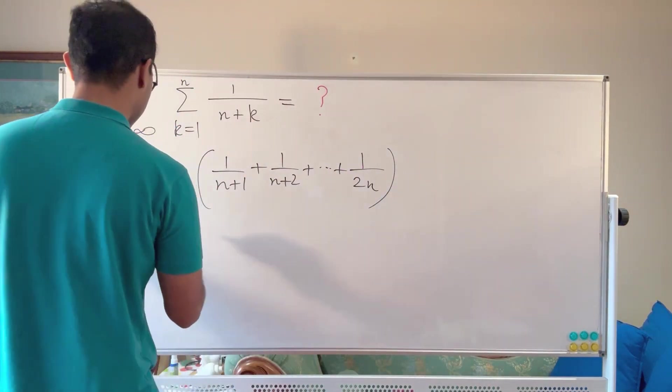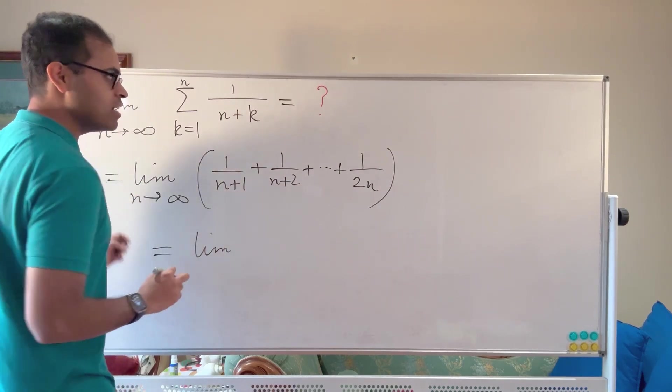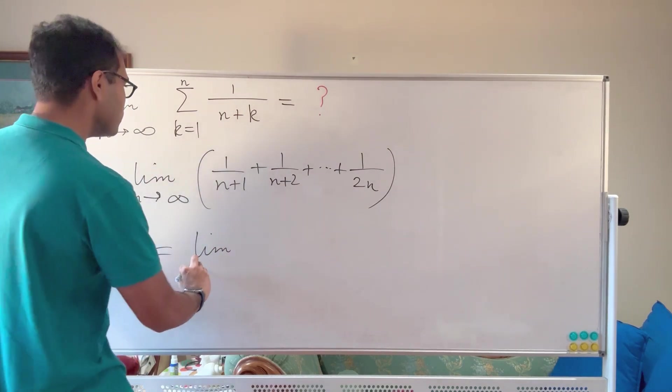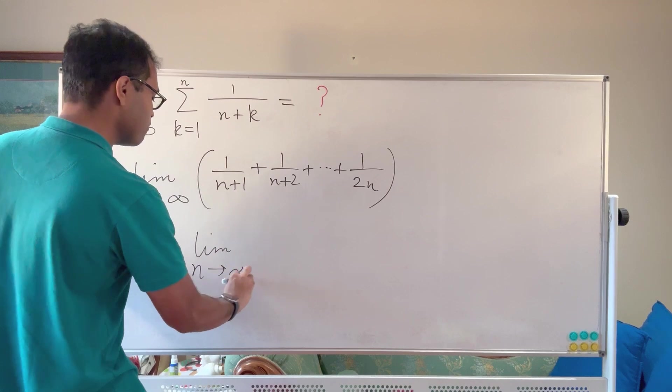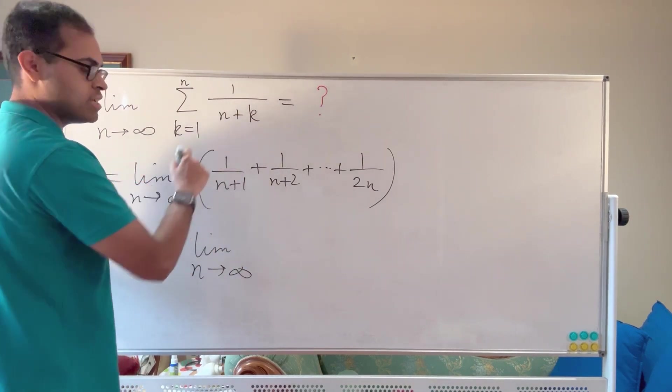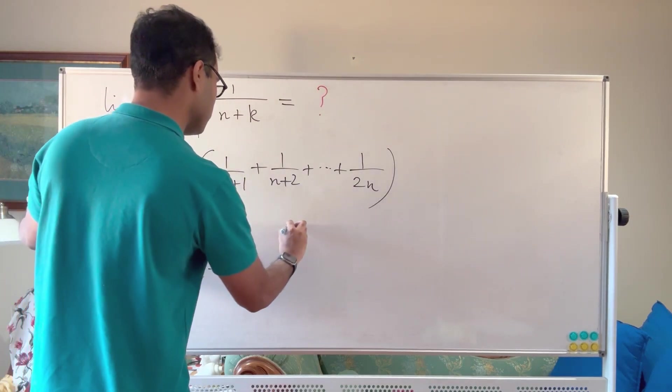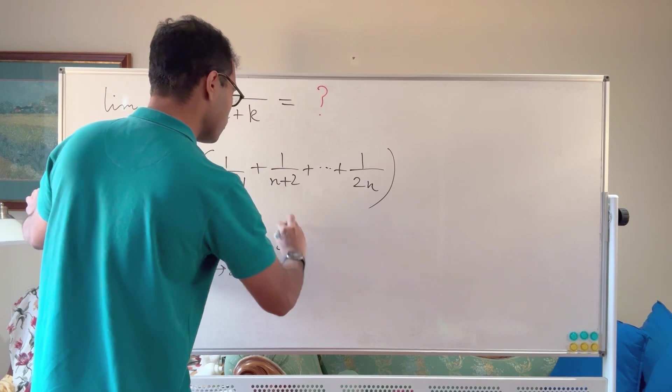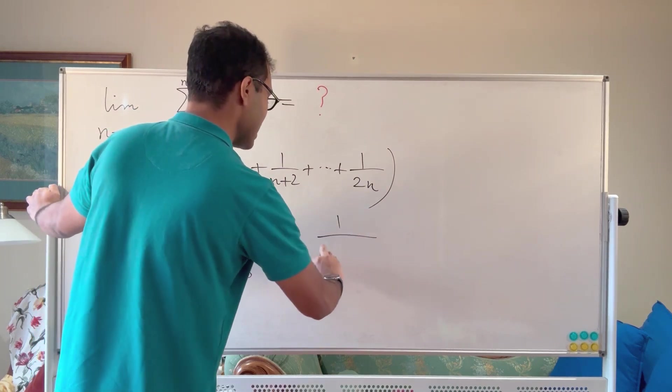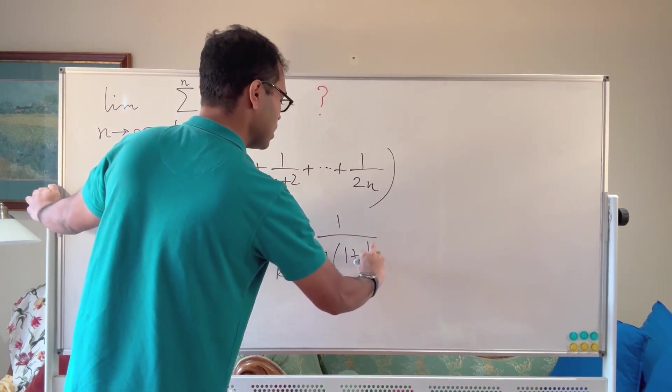So the first trick, and this is really the only trick in this problem once you understand some extra theory, the main idea is that we're going to factor out an n from the denominator. So we're going to take limit n goes to infinity, sum k varies from 1 to n of 1 over n times 1 plus k over n.